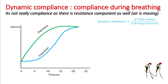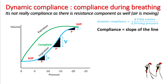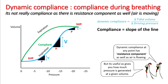The compliance changes throughout as you inspire and expire, and the dynamic compliance is given by change in tidal volume divided by change in driving pressure at any point of the inspiratory or expiratory loop. You do that by drawing a tangent on that line and finding the slope of that line. One thing to understand is that the dynamic compliance at any point also comprises some resistive component because air is flowing through the inspiration and expiration.